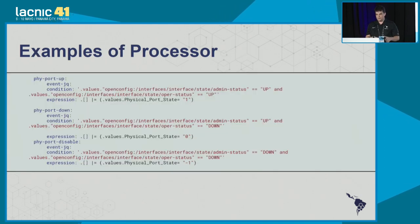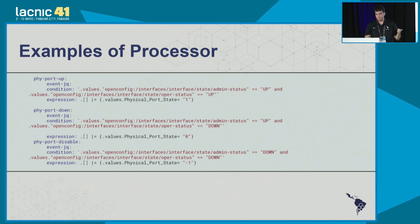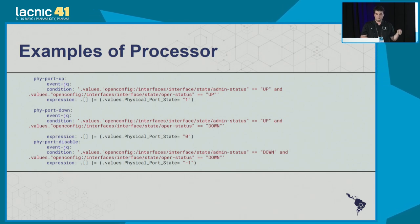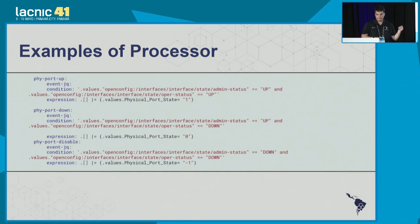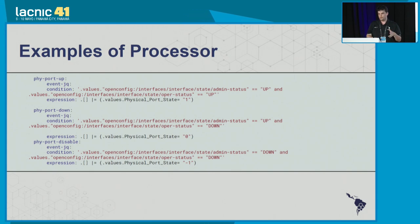This is an example of the processor. I'm taking the interface state that was 'up' or 'down' as a string and making it a numeric value. When the interface operational state is up, I see a 1. When the interface operational state is down, I see a 0. When I have the admin state as down and the oper state as down, I see a -1. We are creating personalized values — making these tags into values we can work with and display the way we want.